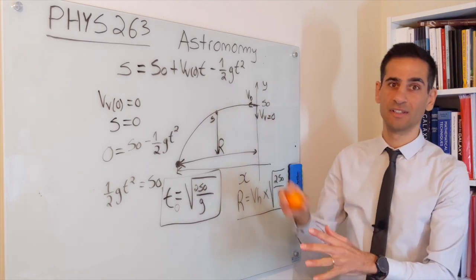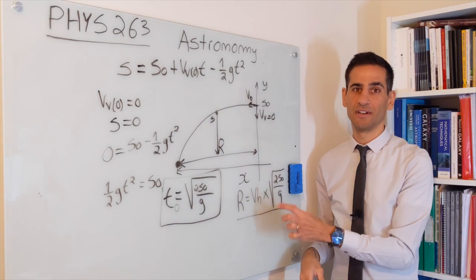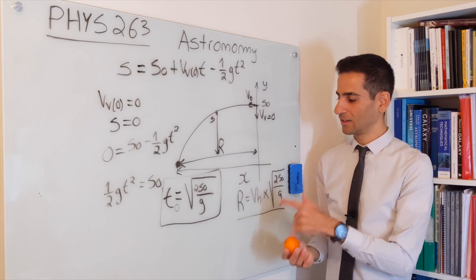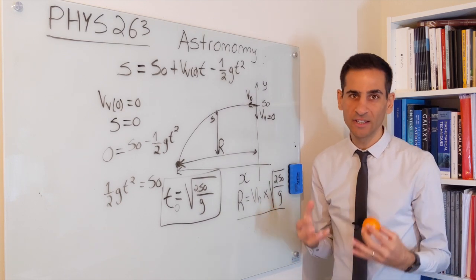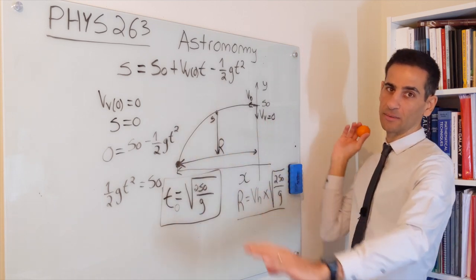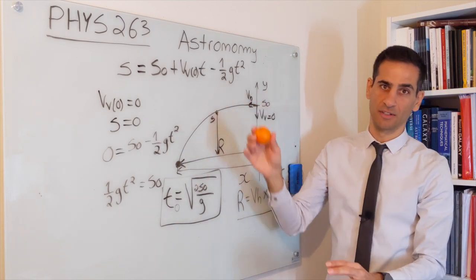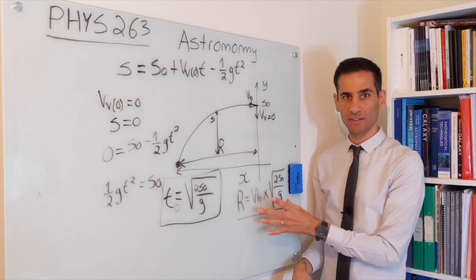If you're really good at throwing oranges, the range is going to be very large. If you're not so good, the range is going to be small. Now, consider that you're really, really good at throwing oranges, and you keep throwing them faster and faster. At what point will this equation break?